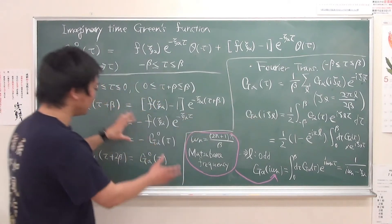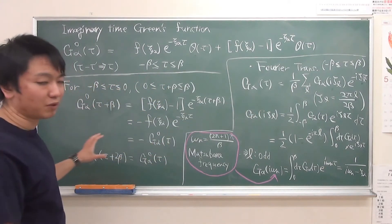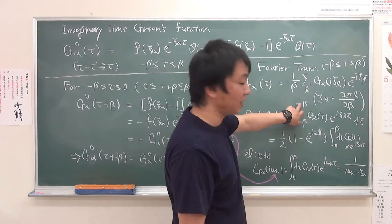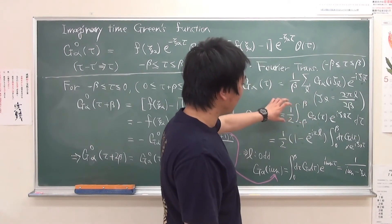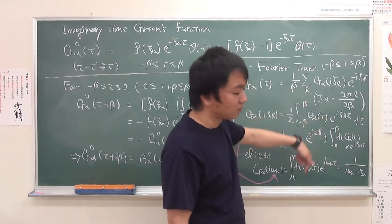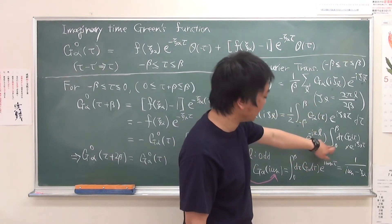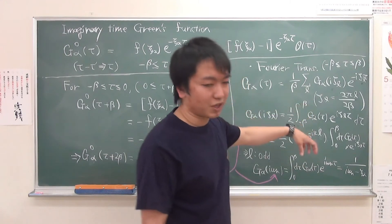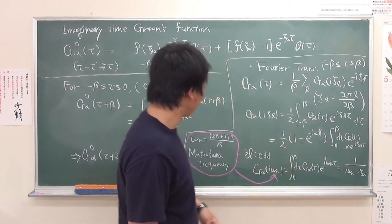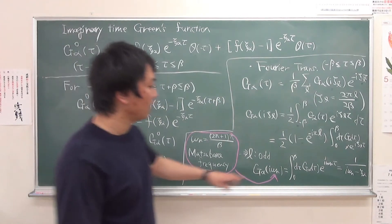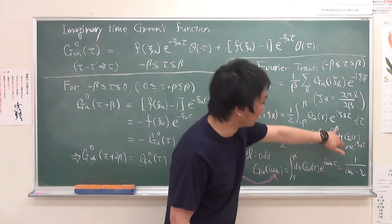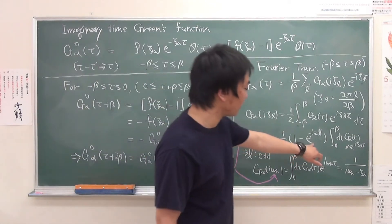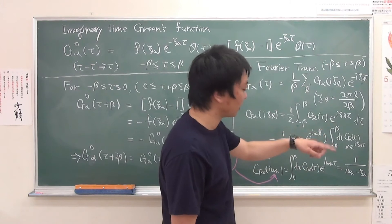So we find this special property of the Green's function. Now this is integration from minus beta to plus beta. But we can rewrite them as we decompose the integration from minus beta to zero and from zero to plus beta. And also one of the integrations from minus beta to plus beta is rewritten by the integration from zero to beta because of this property. Then some factor arises from the tau plus beta term.